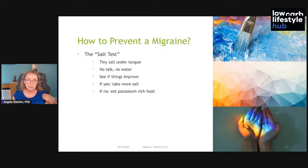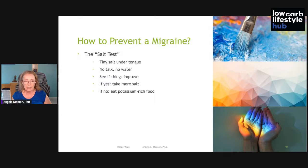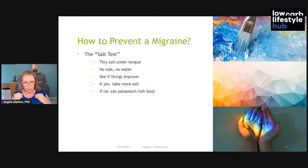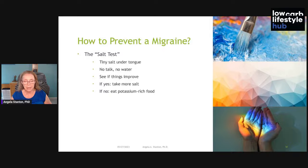If you feel a prodrome or start having pain, I devised in 2014 what I call the salt test. Take a few tiny salt crystals — standard table salt — and put them under your tongue. Don't talk, don't drink, don't swallow. The salt will melt, your saliva will absorb it, and because it's sodium and chloride, it will go straight into your blood and then your brain. Within five to ten minutes, you should feel either a reduction in your prodrome or it gets worse. If the prodrome reduces, that means you need more salt. If it gets worse, you want to stop the salt and increase potassium.